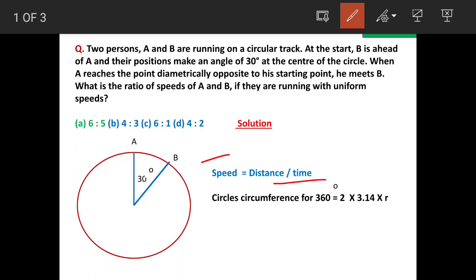For circular distance, the formula is 2 into 3.14 into R. That means for this circumference, for an angle of 360 degrees, this is the formula. So what are the angles done by A and B?